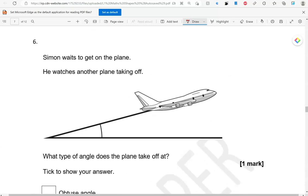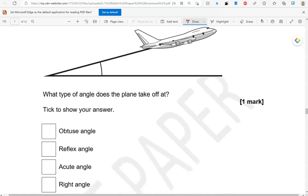Simon waits to get on the plane. He watches another plane taking off. What type of angle does the plane take off at? Tick to show your answer. So, again, this is less than 90 degrees. So, it's an acute angle.